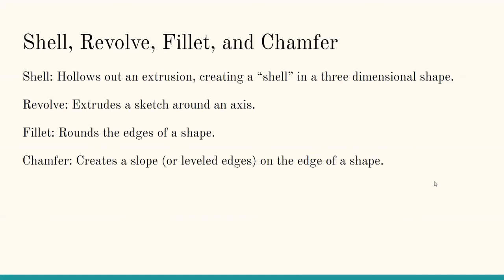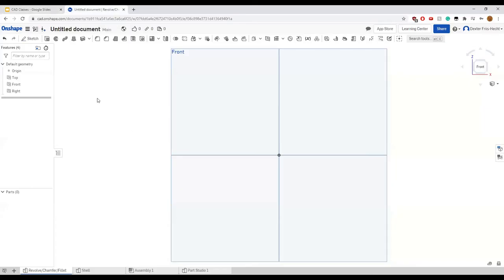Some tools that may need clarification from the last meeting are the shell, revolve, fillet, and chamfer tools. The shell tool hollows out an extrusion, creating a shell of the original shape by removing a face. The revolve tool extrudes a sketch around an axis. The fillet tool rounds the corners of a shape, and chamfer creates beveled edges. We'll show examples in this OnShape document.